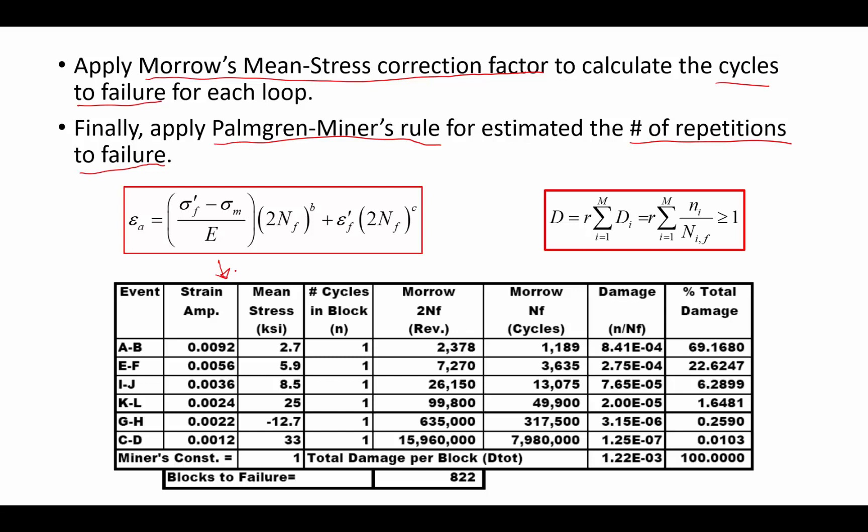We've got the strain amplitude, we calculate what the mean stress is, we'll say that there's one cycle, so there's one hysteresis loop in the overall VAL block, and then we'll figure out, using Morrow, what is the cycles of failure, and how much damage is accumulated from using Palmgren's Miner at each of these hysteresis loops.